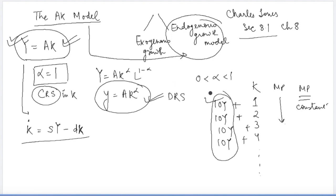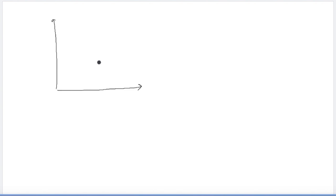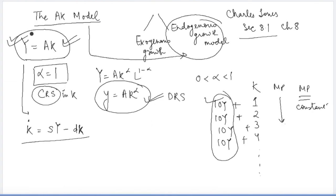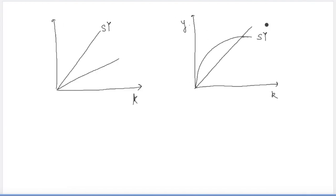If we look at a simple graph with capital on the x-axis — just as we drew two graphs in the Solow model — the difference is that in the Solow model the investment function was a curve, whereas in the AK model the savings function is a linear function. This is because Y is exactly equal to AK, so there is no non-linear curve here. Since K has no exponent, this is a linear function in capital. We also draw the depreciation line, just as in the Solow model.